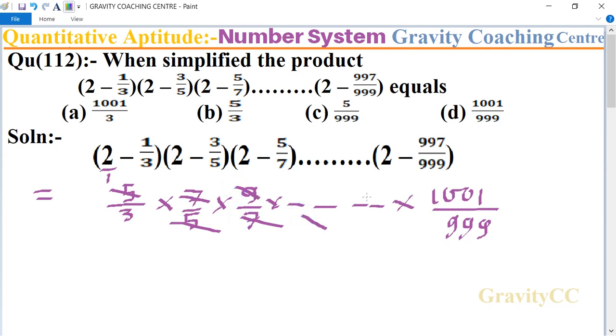and 999, so equal to 1 upon 3 multiply 1001, equal to 1001 upon 3, which is the required answer.